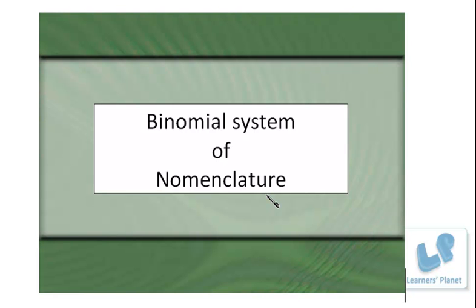Who was the person who actually introduced this particular system — who proposed this binomial system of nomenclature? It was Carl Linnaeus, who is also known as the father of botany and the father of taxonomy. Taxonomy is the branch of science that deals with the classification of organisms, and this nomenclature is related to those organisms.